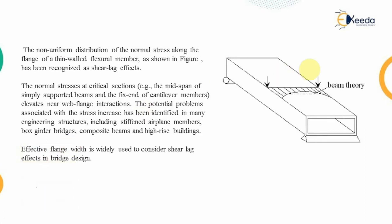This can be understood with the example of a box girder. The non-uniform distribution of normal stress along the flange of a thin-walled flexural member is recognized as the shear lag effect. At the critical section — for example, at the mid-span of a cantilever or simply supported beam — due to web-flange interaction, the area of load transfer varies. At the web portion the area suddenly decreases, causing stresses to increase, and therefore the pure bending equation cannot be applied.